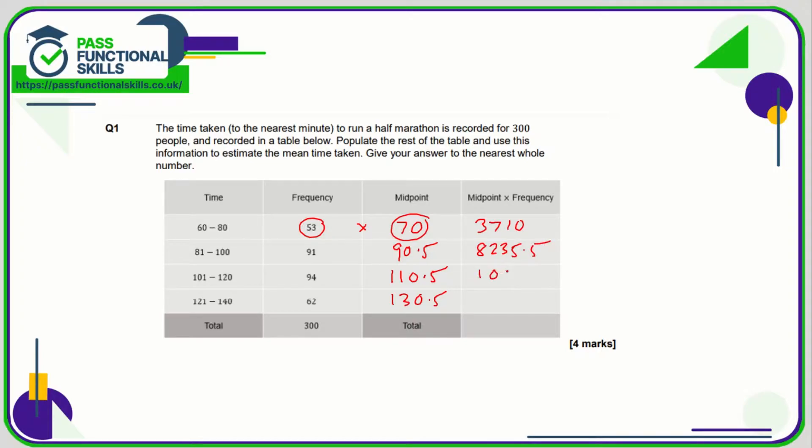So that comes to 3710. The next one is 8235.5, next one is 10387, and finally 8091.